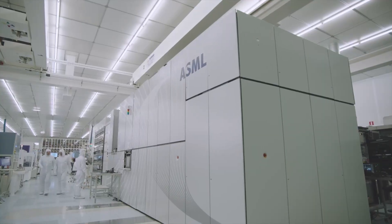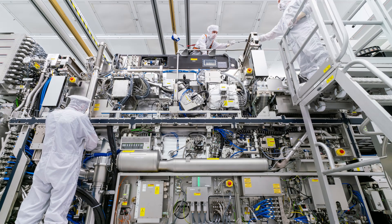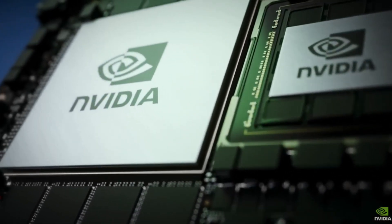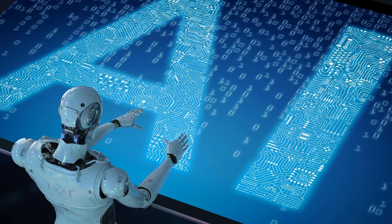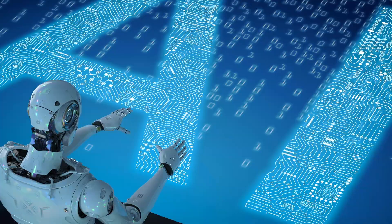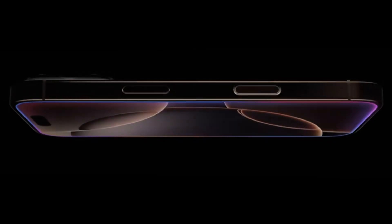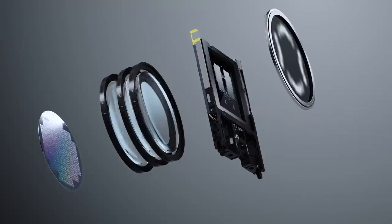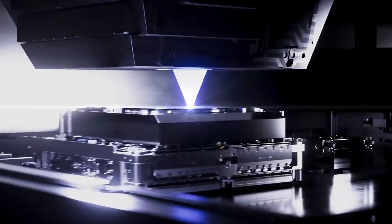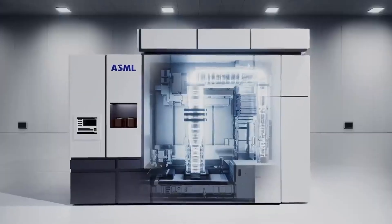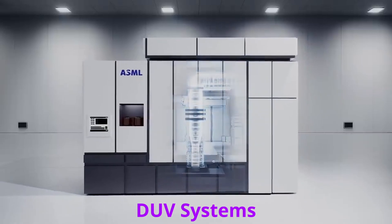Today, ASML's EUV machines are responsible for the most advanced chips on the planet. Without them, there would be no artificial intelligence revolution, no supercomputers or next generation smartphones. But there is a serious problem. Despite all the sophistication, these machines produce fewer wafers per hour than previous generations, such as DUV machines.